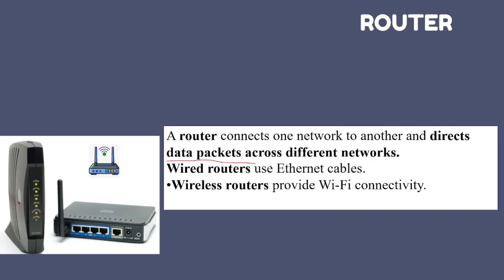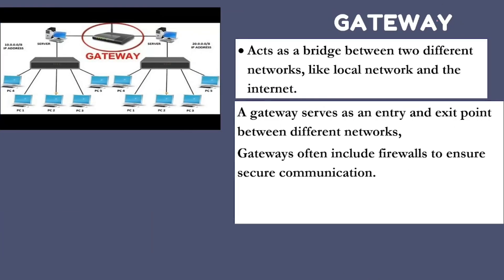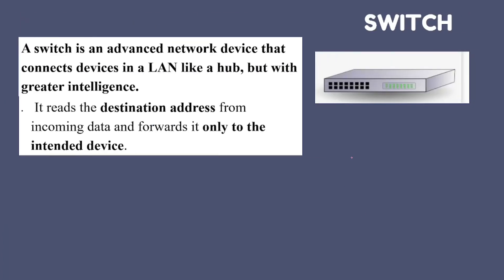A router directs data packets across different networks — this is the important point. Wired routers use ethernet cable; wireless routers provide Wi-Fi connectivity. A gateway serves as an entry and exit point between different networks. It acts as a bridge between two different networks and often includes firewalls to ensure secure communication.